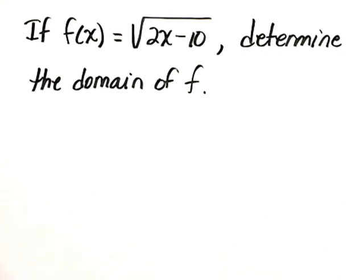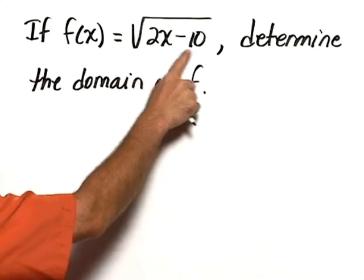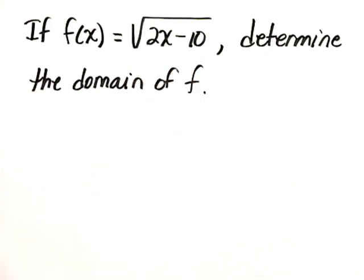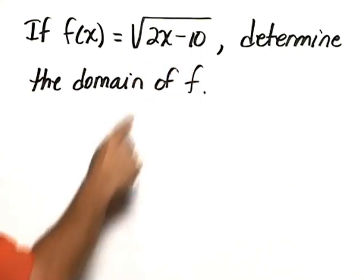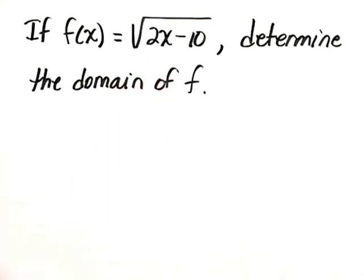To determine the domain, what we're interested in is that this expression, 2x minus 10, must be non-negative so that we're taking the square root of a non-negative number.